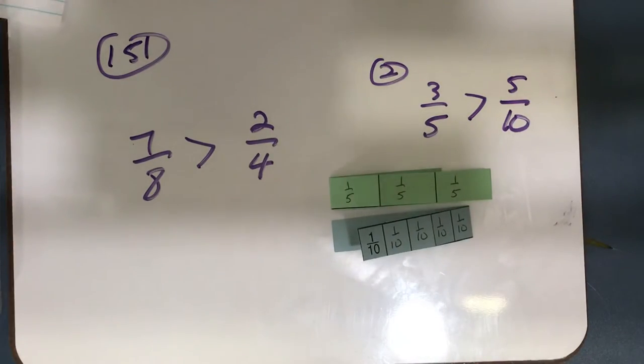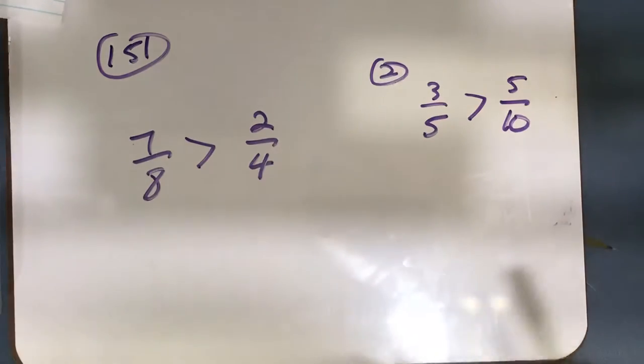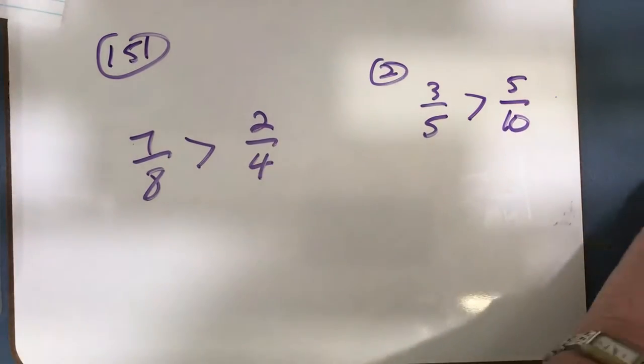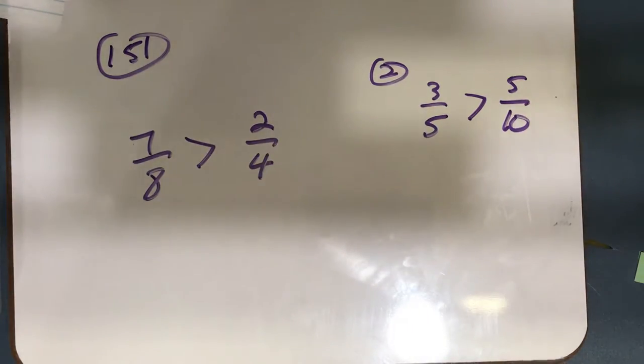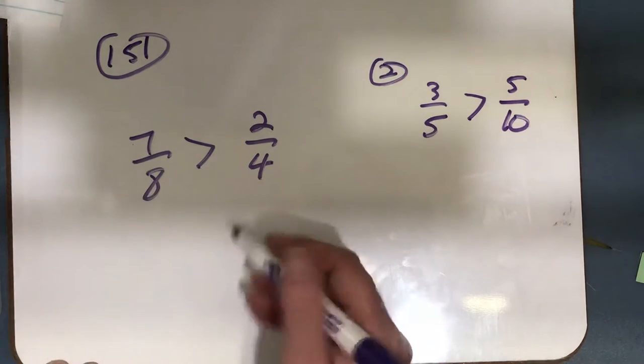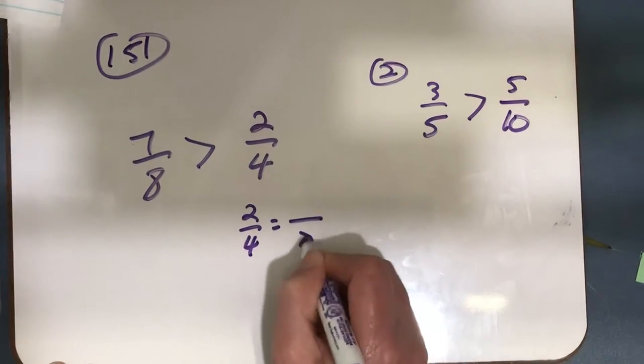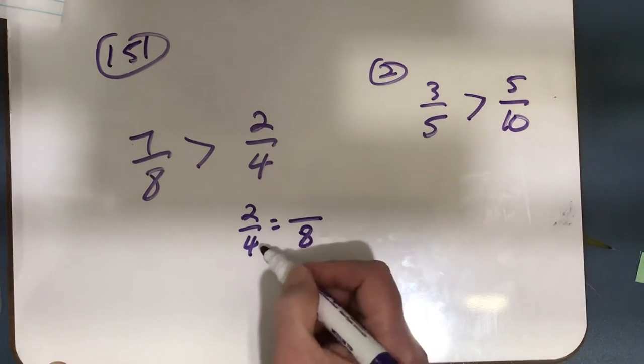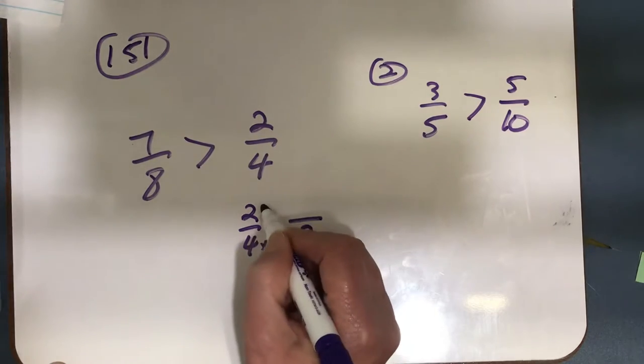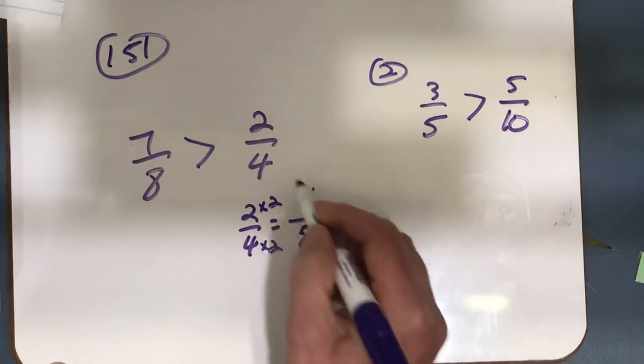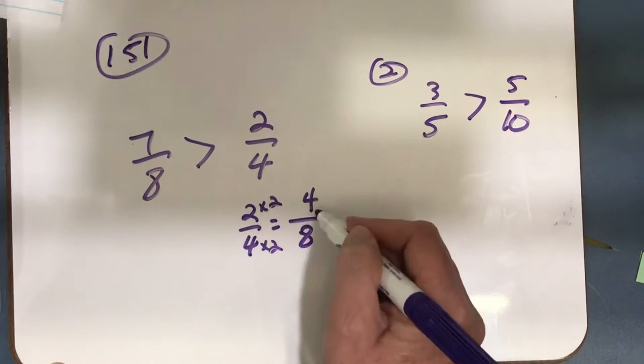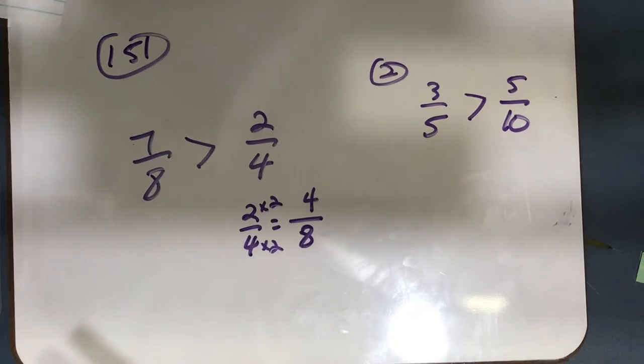Or you can change it so that you have the same denominator. So let's go back to our fraction here, 7 eighths and 2 fourths. I can change 2 fourths to eighths. I can make an equivalent fraction. 4 times 2 is 8, so I multiply my numerator, 2 times 2 is 4. So 2 fourths is the same thing as 4 eighths, and 7 eighths is greater than 4 eighths.